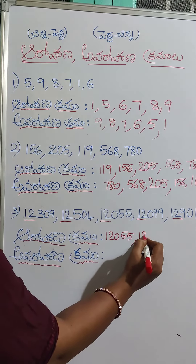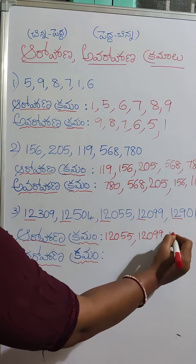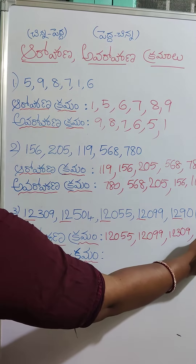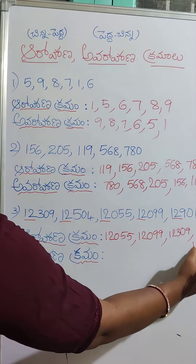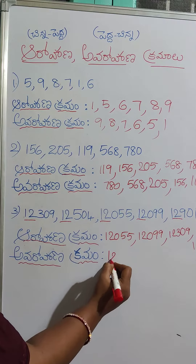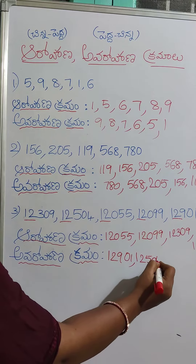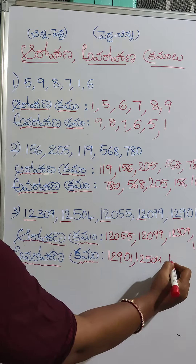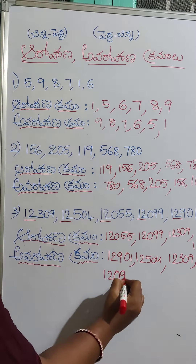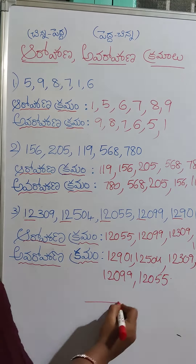55, next 99, 12,099, next 12,000 309, next 12,000 504, next 12,000 901. Next 12,504, next 12,309, next 12,099, next 12,055. Subscribe for more videos.